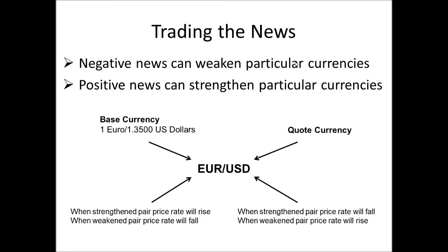Negative news can weaken particular currencies. For example, negative news in Great Britain can weaken the pound, and positive news can strengthen particular currencies. Currencies are traded in pairs. In this illustration it's the euro/US dollar. The first currency in the pair is the base currency and has a value of one. So if the quoted price for the euro/USD is currently 1.3500, that means for one euro you would get 1.3500 US dollars. If we had the pound/USD at 1.6550, one pound would be worth 1.6650 US dollars.